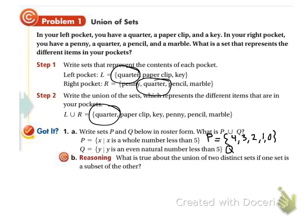And if I find the roster form for Q, it says Y such that Y is an even natural number. Remember that a natural number is a positive number. So an even natural number less than 5. So 4 is even and natural, 2 is even and natural, and that's all.